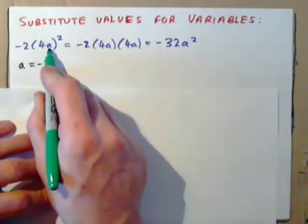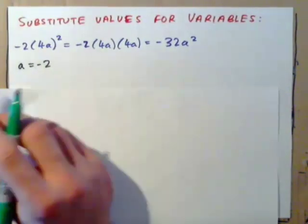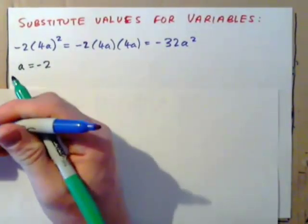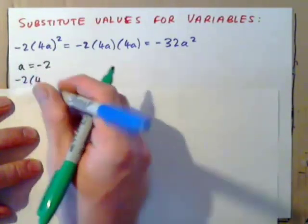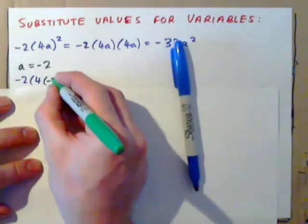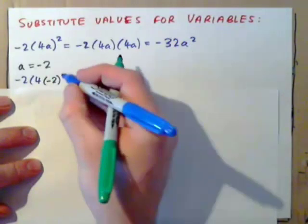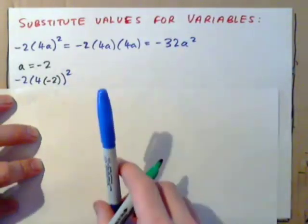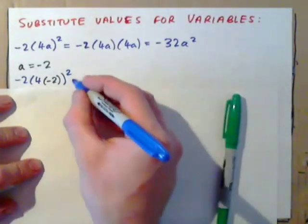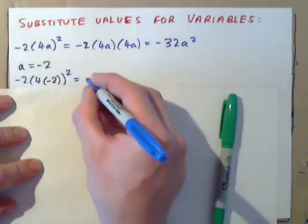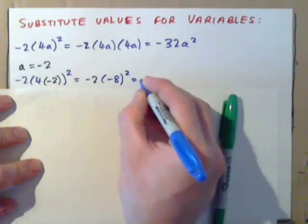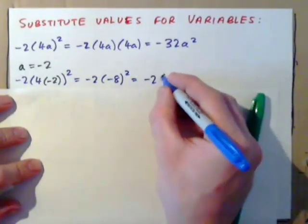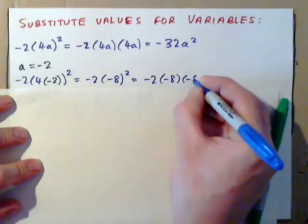you could either plug -2 in here and then calculate -2 times 4, and it's 4 times -2 all squared. So you could calculate that, and that would be -2 and 4. You do the inside part, 4 times 2 is -8 all squared. That gives -2 times -8 times -8,